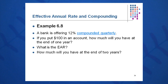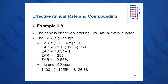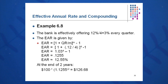Let's look at another example. A bank is offering 12% compounded quarterly. Right away your EAR antennae go up and you know you need to calculate the EAR before moving forward. We have $100 in an account — how much will we have at the end of one year, and what is the EAR? First, calculate EAR: 1 plus 0.12 over 4, to the 4th power, minus 1, which gives an EAR of 12.55%.